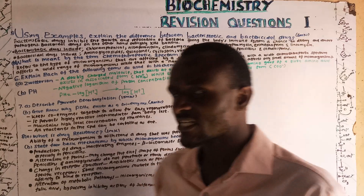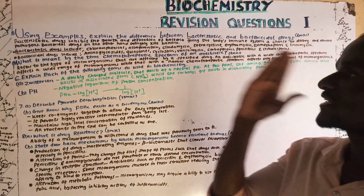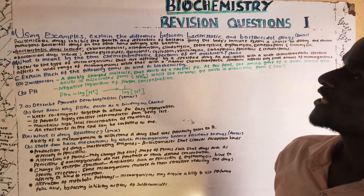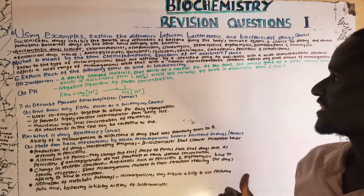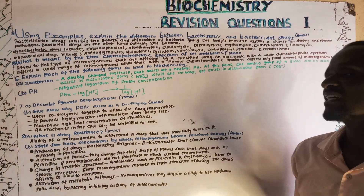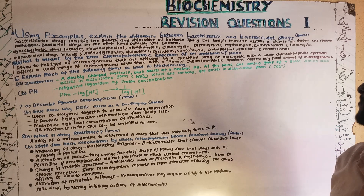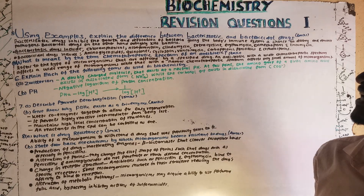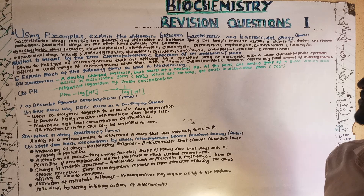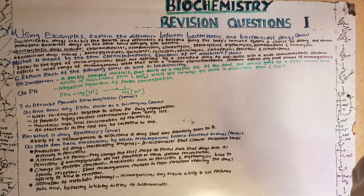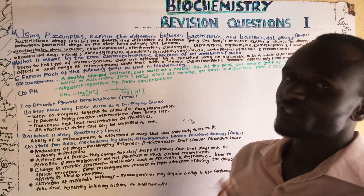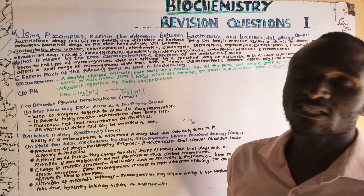Additional bacteriostatic drugs include tetracycline, erythromycin, trimethoprim, and lincomycin. Bactericidal drugs include aminoglycosides, quinolones, cycloserine, vancomycin, carbapenems, penicillins, and cephalosporins. You need to know the difference between these two categories.